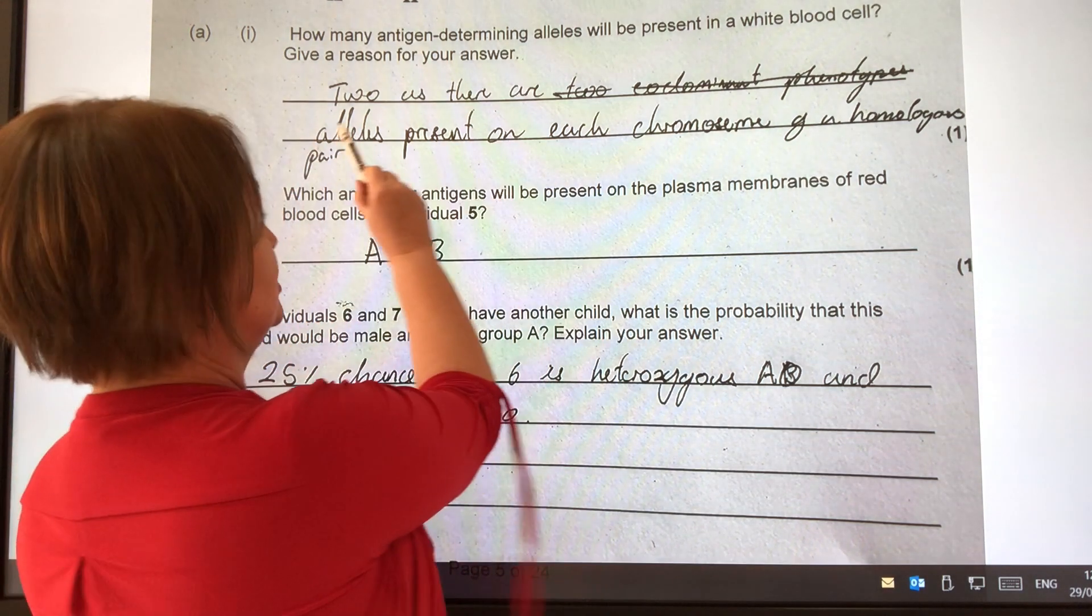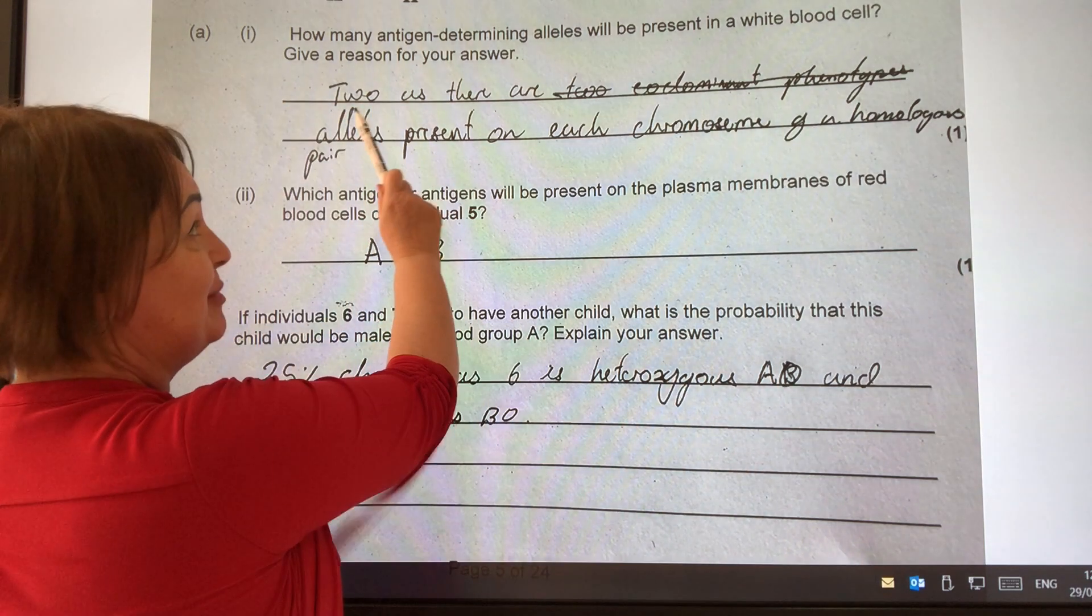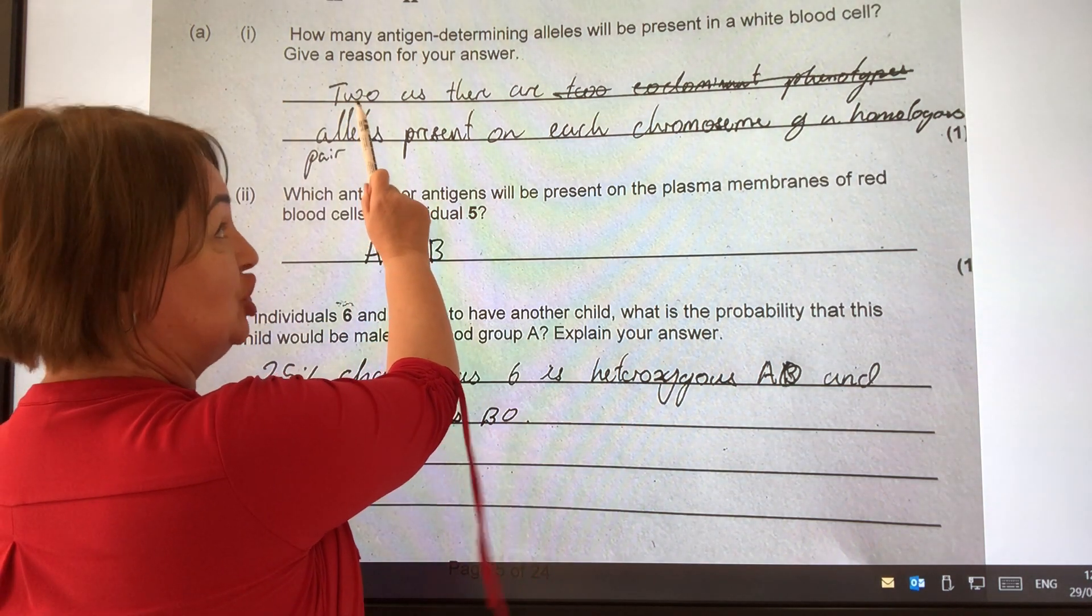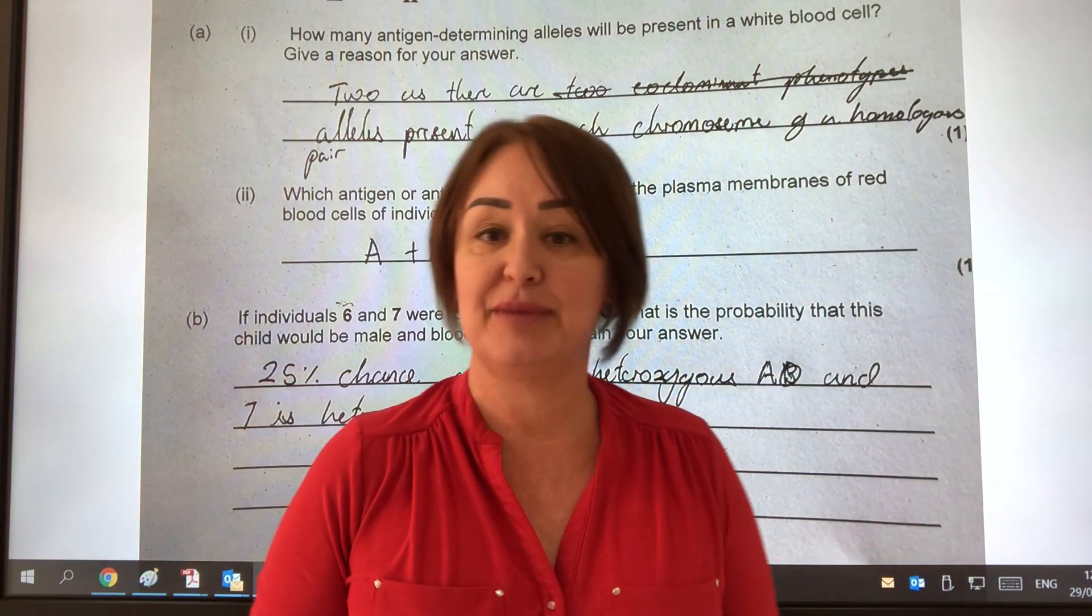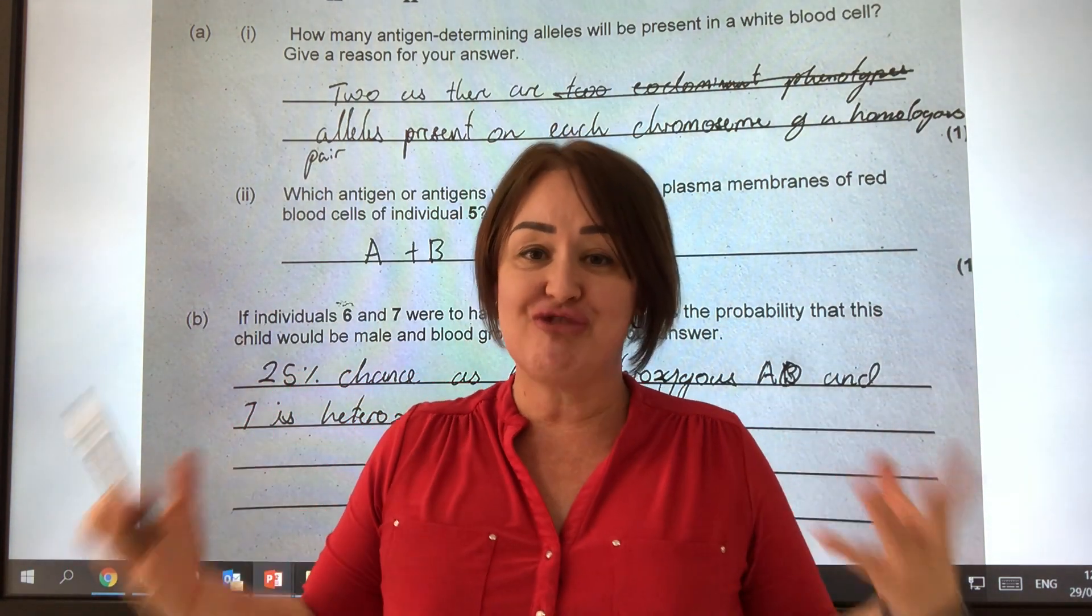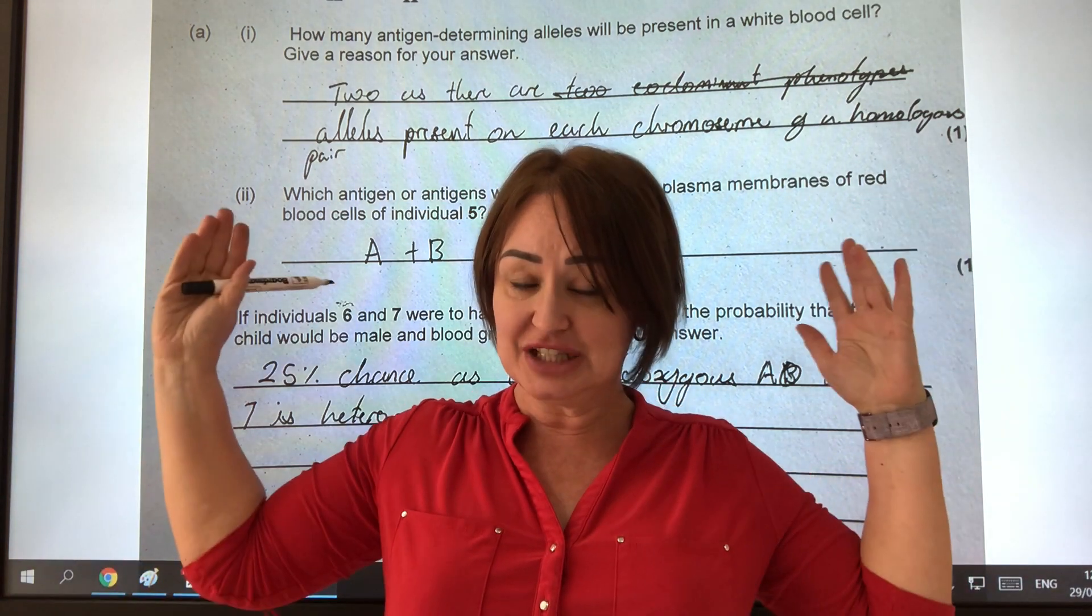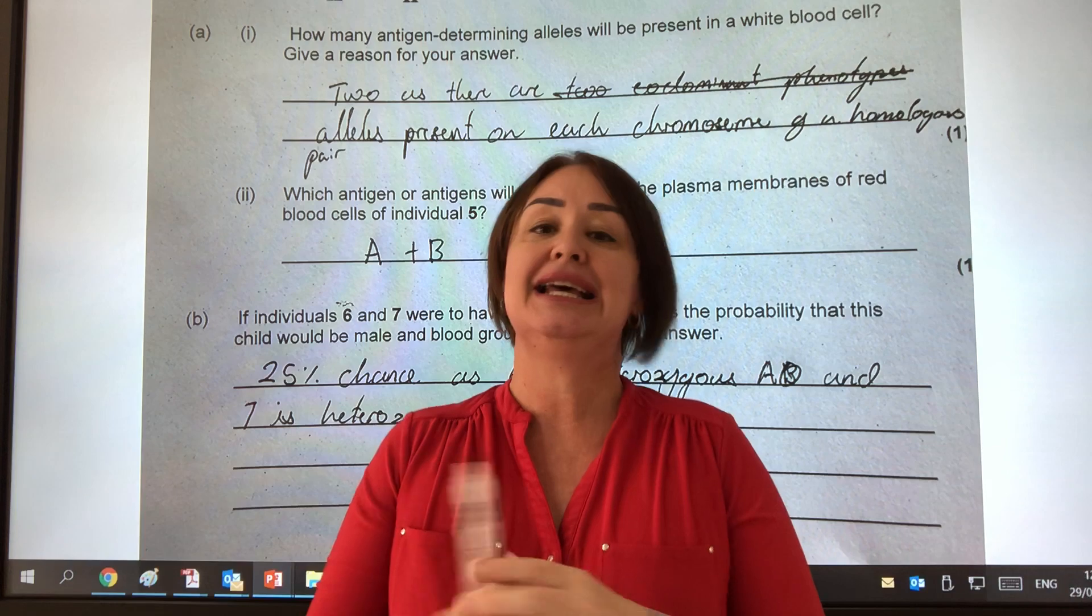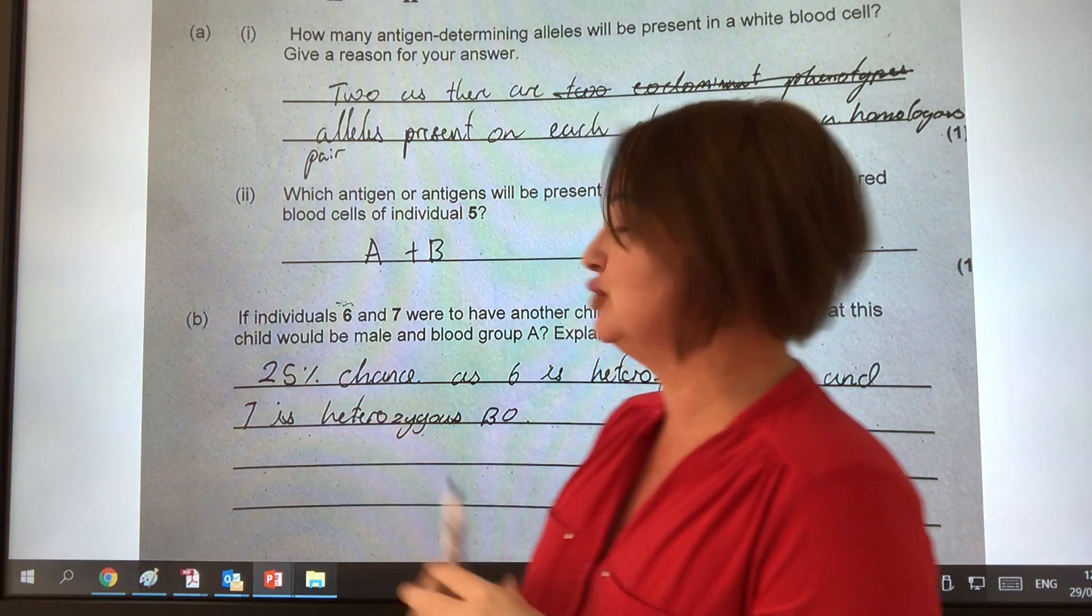However, this student has actually changed their answer when we went through it in class. At the beginning, he had written two, which is correct, as there are two co-dominant phenotypes. But that's not the right answer. It's just explaining about co-dominance. This question is broader than co-dominance. It's about how many alleles do we have to code for an antigen? And of course, it's two because we're diploid.